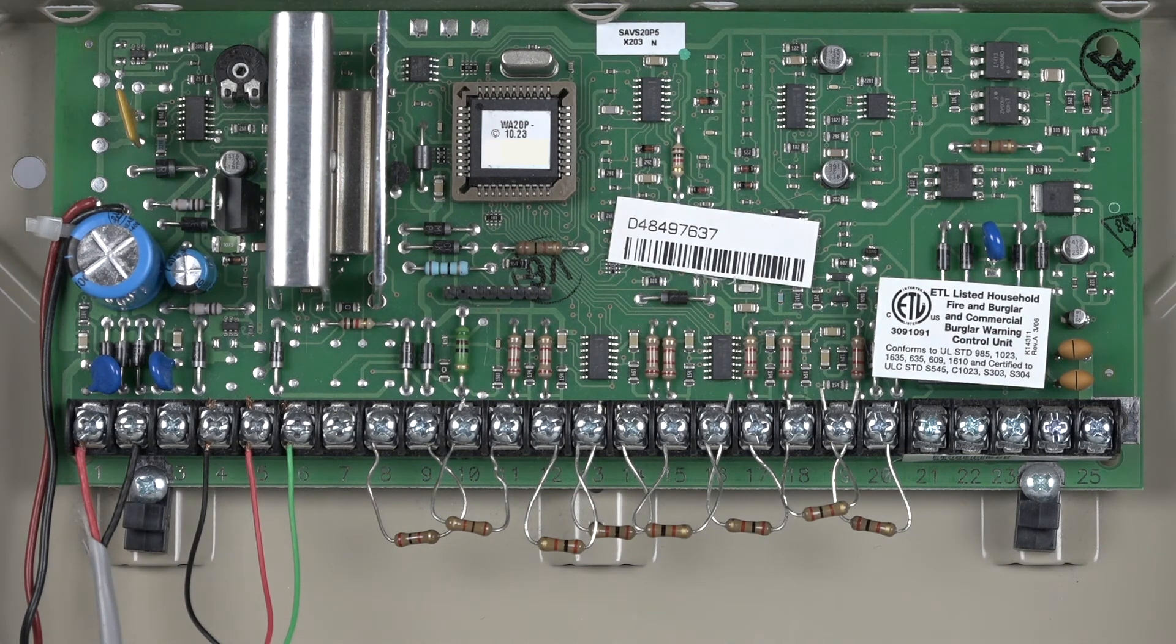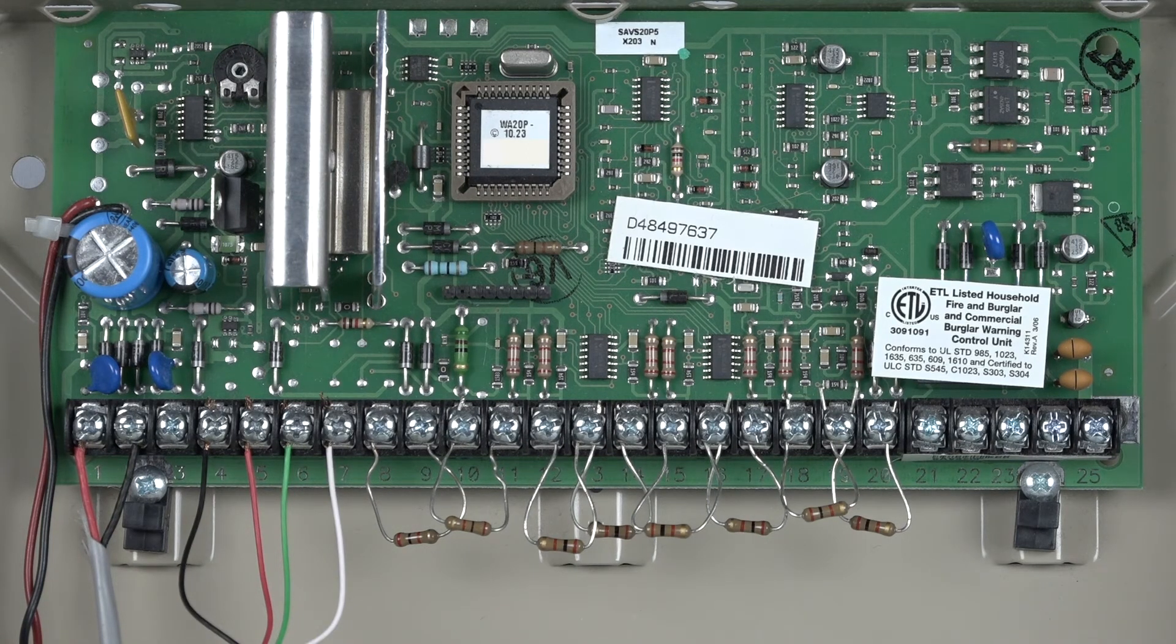Lastly, your yellow or data out wire will be connected to Terminal 7. You can also connect any additional ECP devices during this time such as a wireless receiver, a relay, an alarm net communicator or other keypads.